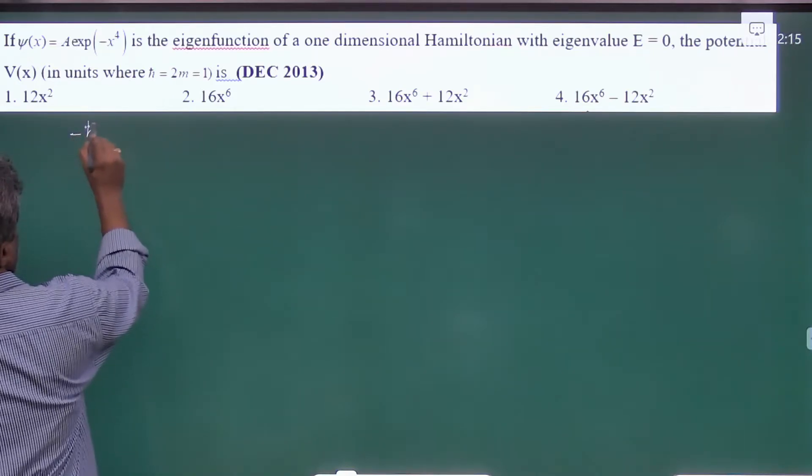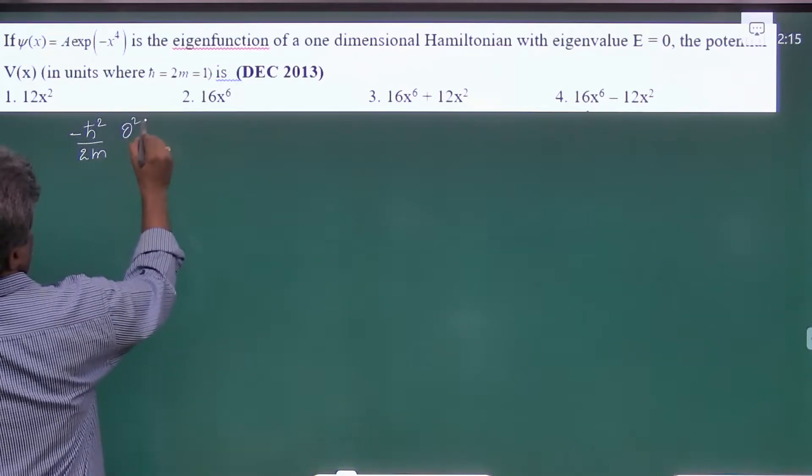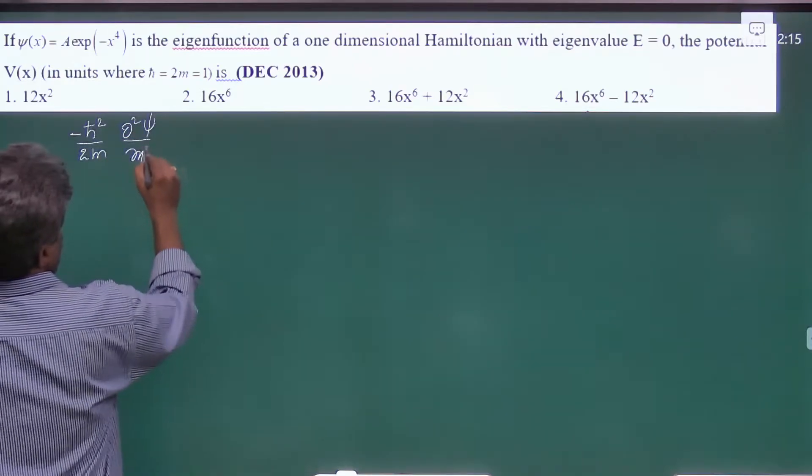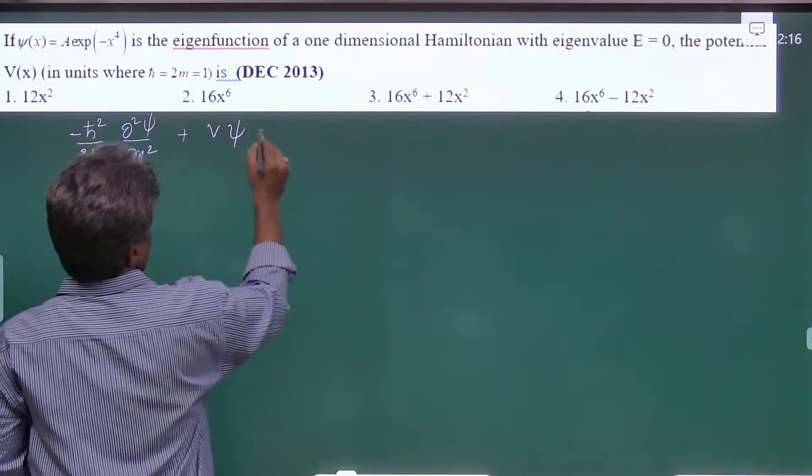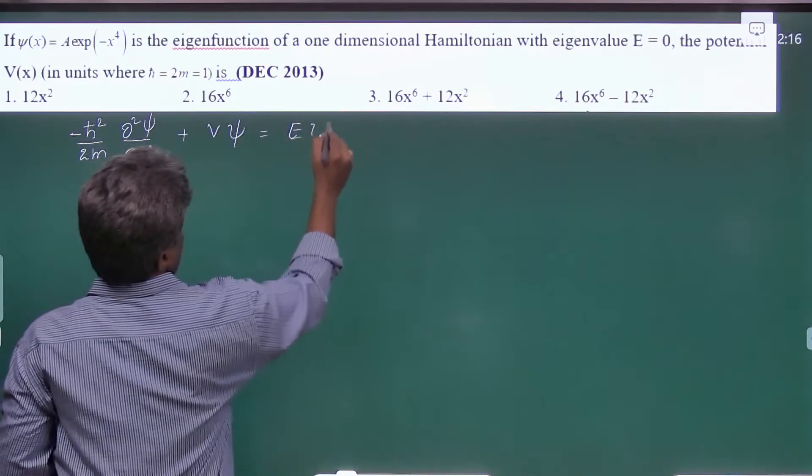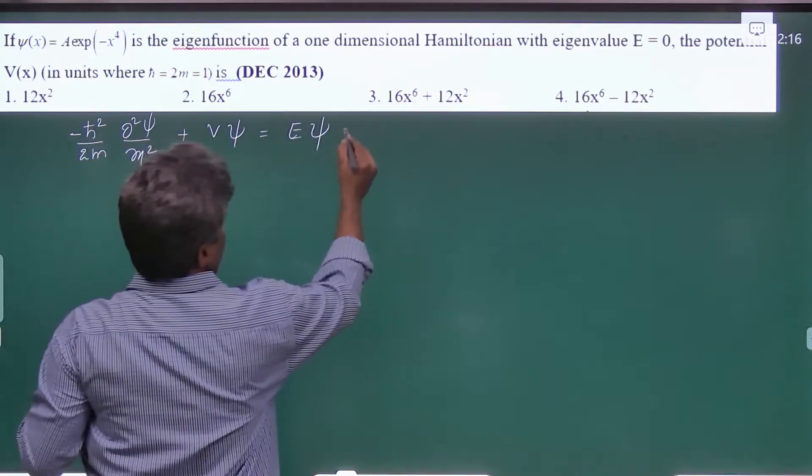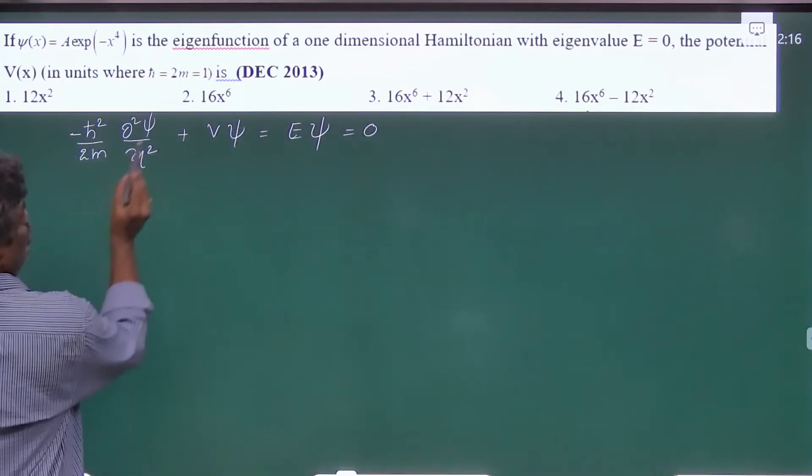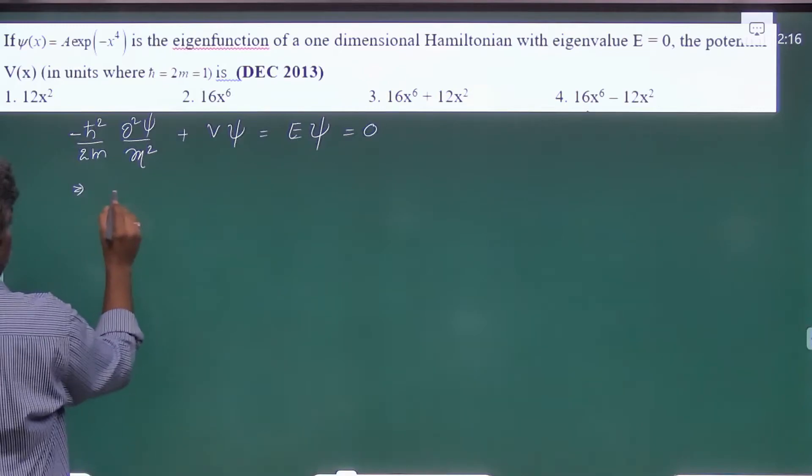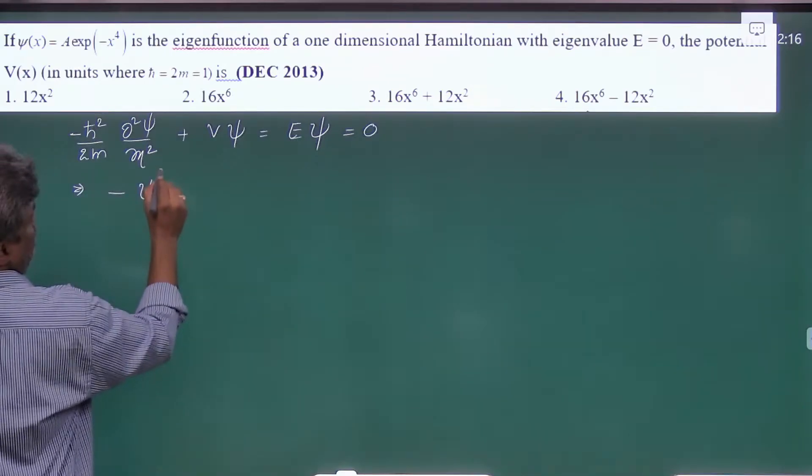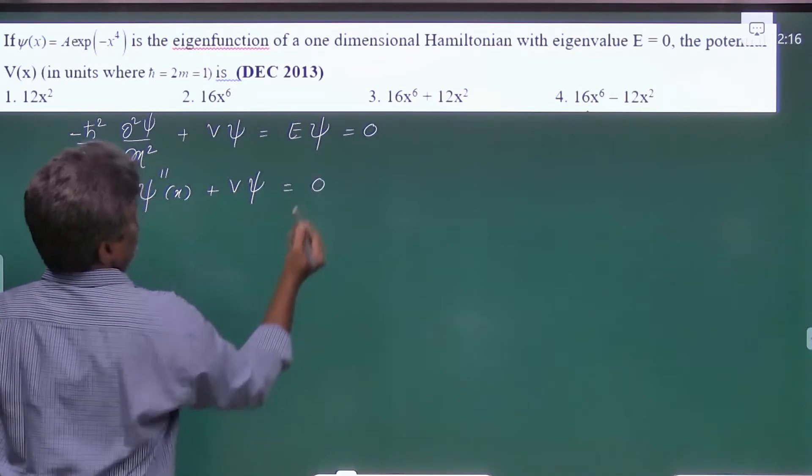First, let us write Schrödinger's equation: -ℏ²/2m d²ψ/dx² + Vψ = Eψ. But they have given energy is 0, so we can take it as simply 0. Since ℏ is 1 and 2m is also 1, this becomes -ψ''(x) + Vψ = 0.